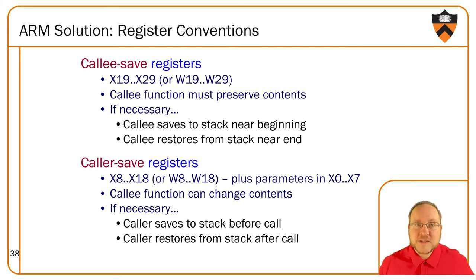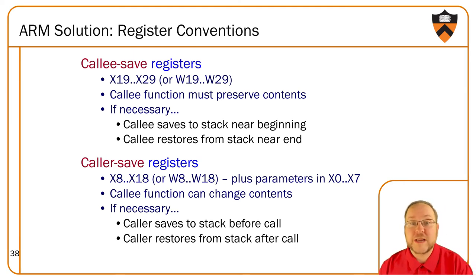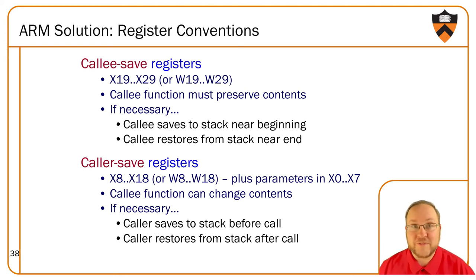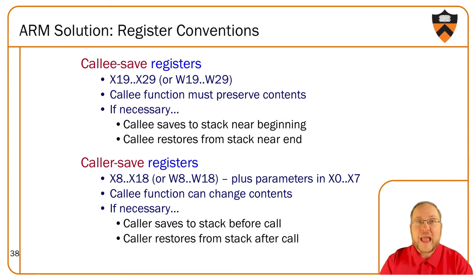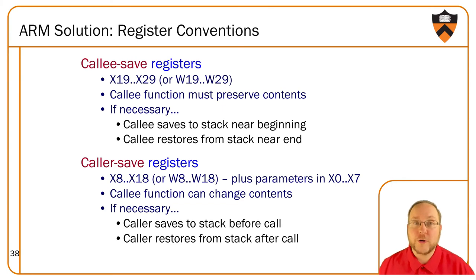The caller saved registers are a win for the function being called — they can use those registers with impunity. But for the caller, any important values must be saved to memory before the function call. As a typical approach, use caller saved registers as much as you can. But when you have a variable that will persist across many function calls, it may be worthwhile to put it in a callee saved register — save the old value once, use it forever, restore at the end.